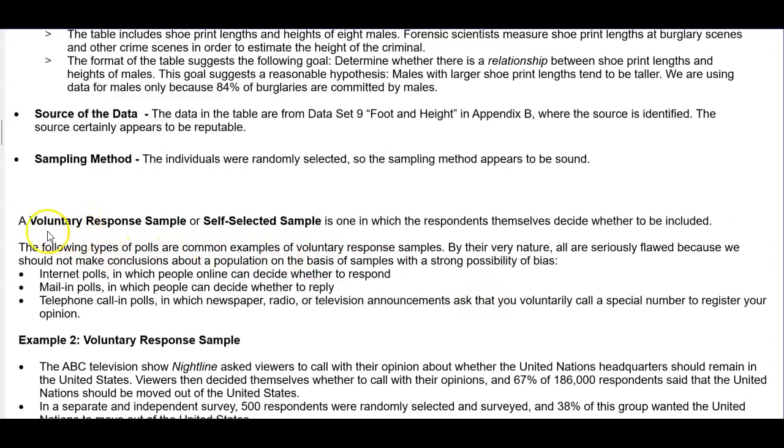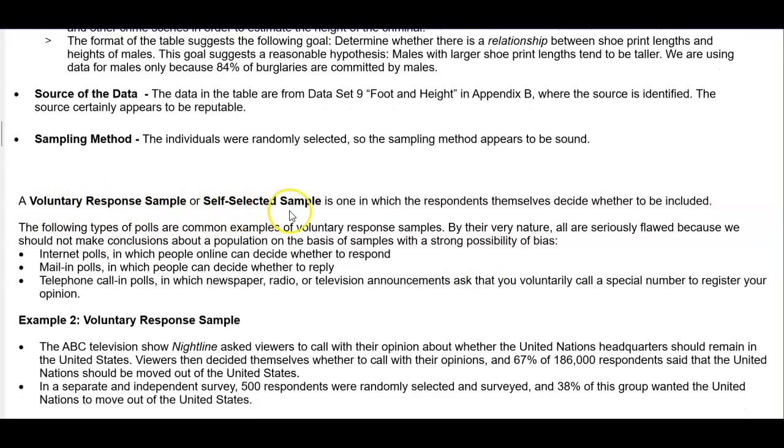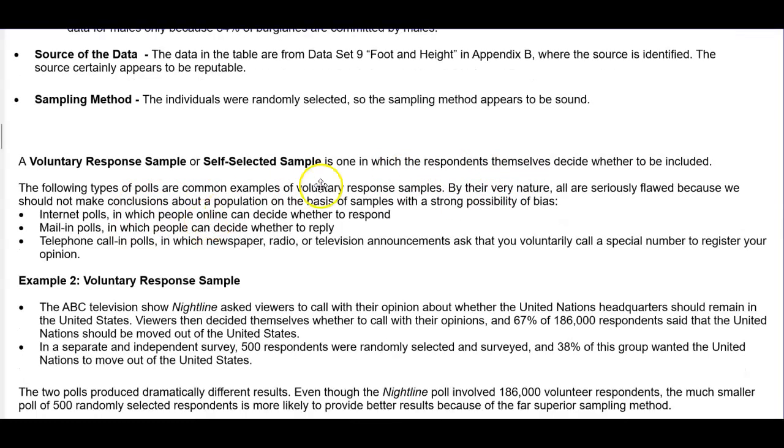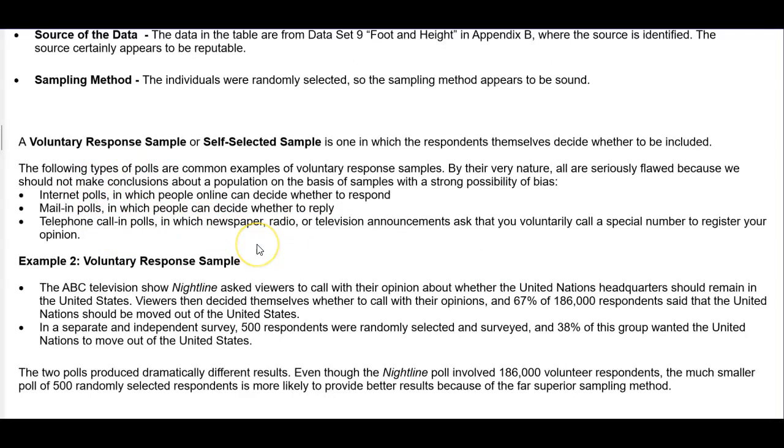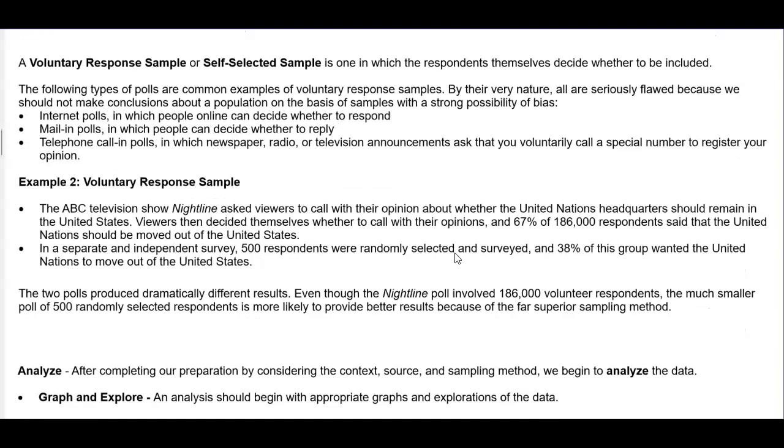Another way of collecting a sample is a voluntary response sample or self-selected sample, which is one in which the respondents themselves decide whether to be included. The following types of polls are common examples of voluntary response samples. By their very nature, all are seriously flawed because we should not make conclusions about a population on the basis of samples with a strong possibility of bias. Internet polls, in which people online can decide whether to respond. Mailing polls, in which people can decide whether to reply. Telephone calling polls, in which newspaper, radio, or television announcements ask that you voluntarily call a special number to register your opinion.